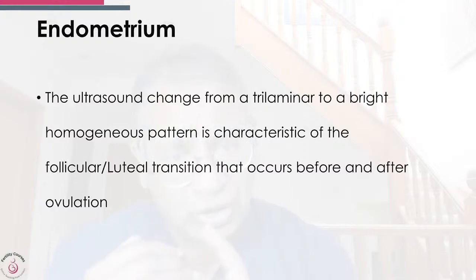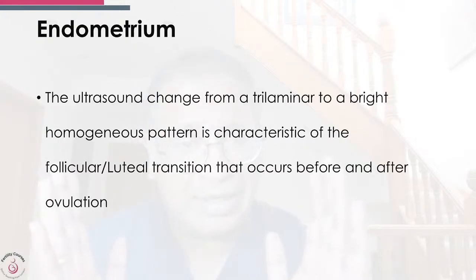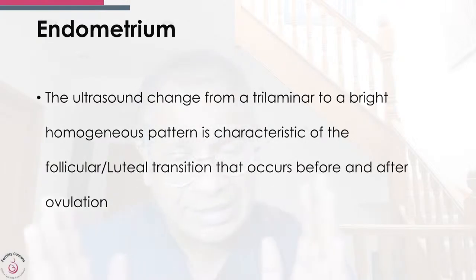The change from a trilaminar to a bright homogeneous pattern on ultrasound is characteristic of the luteal phase transition that occurs before or after ovulation. However, in some cases — such as metabolic PCOS or cases of damaged endometrium — you do not see the typical trilaminar lining, and there is conflicting data on whether pregnancy rates are reduced in these cases.